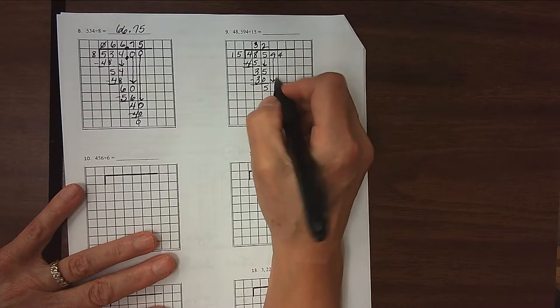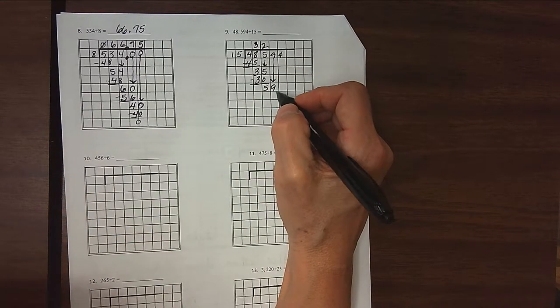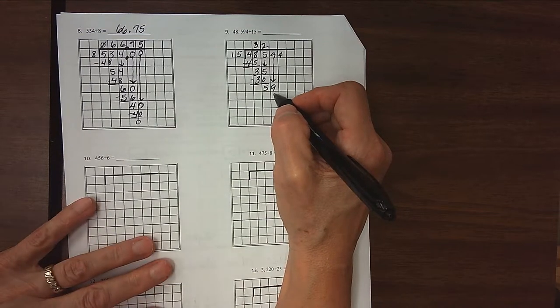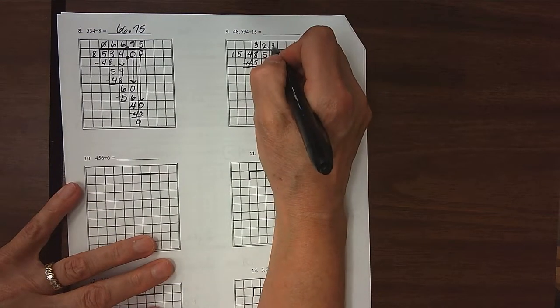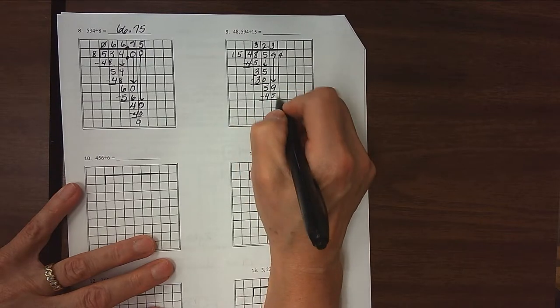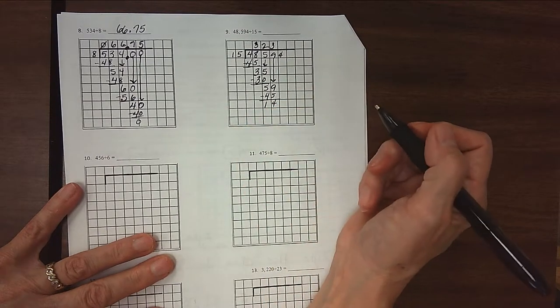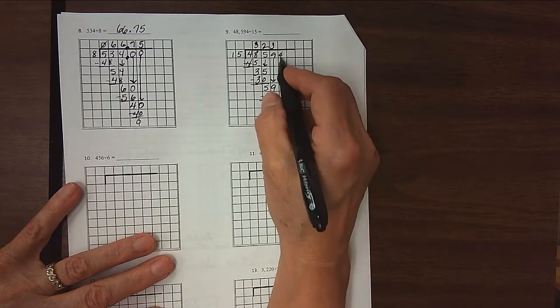Bring down our 9 here. 15 will go into 59, if it were 60 it would be exactly 4 times, so we'll have to back down 1 to 3. And we know that 3 times 15 is 45. Subtract, 9 minus 5 is 4, 5 minus 4 is 1. Bring down our 4.